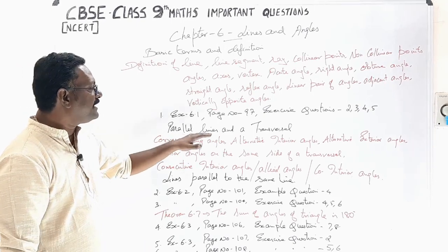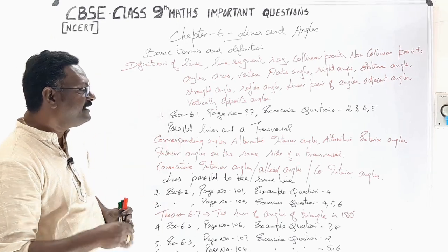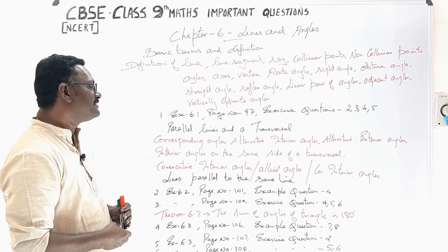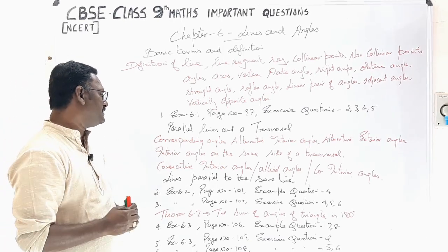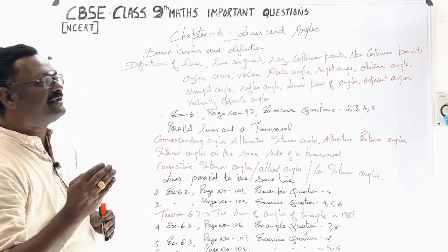Parallel lines and a transversal heading. Corresponding angles, alternate interior angles, alternate exterior angles, interior angles on the same side of a transversal, consecutive interior angles, allied angles, co-interior angles.